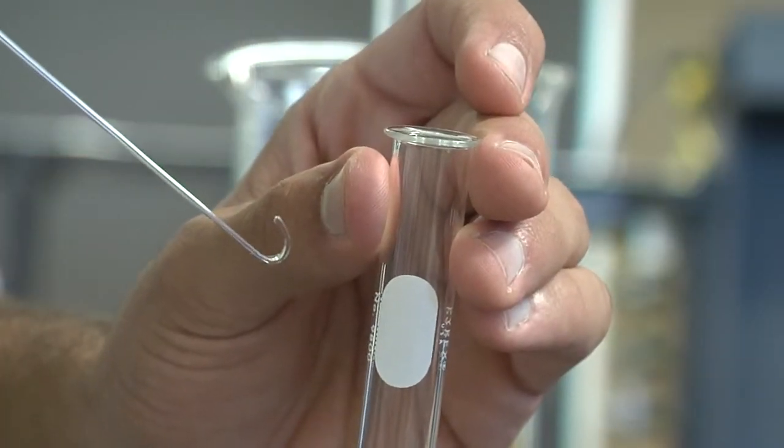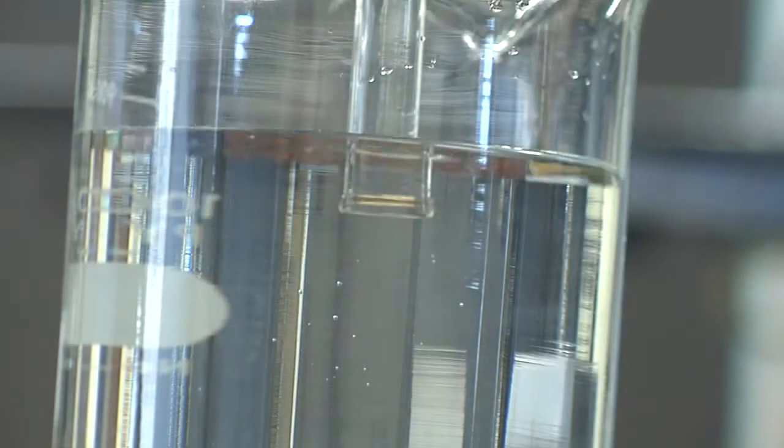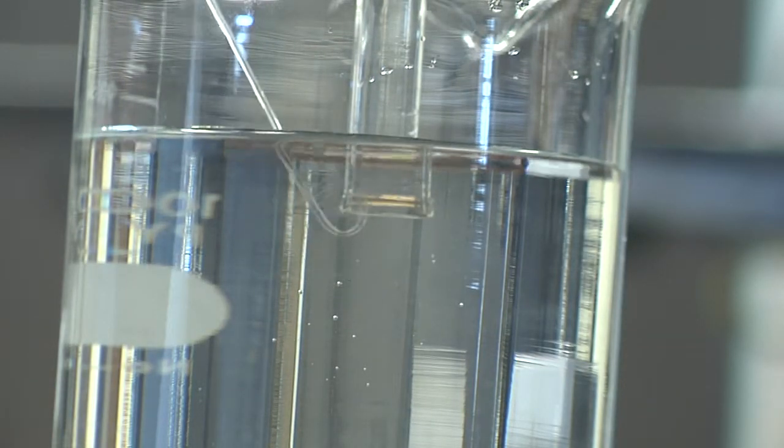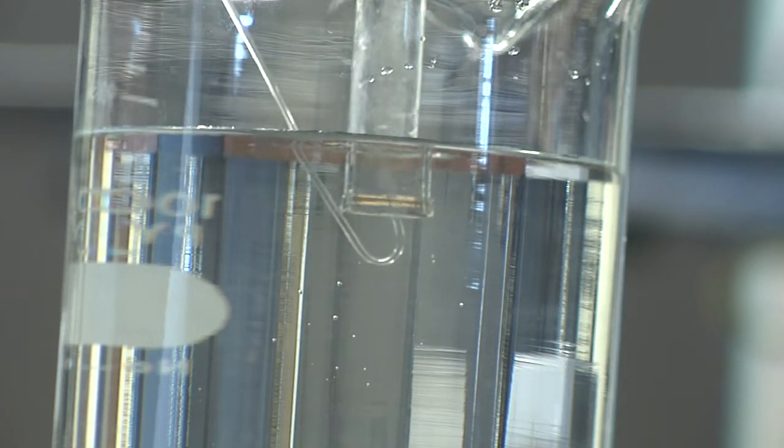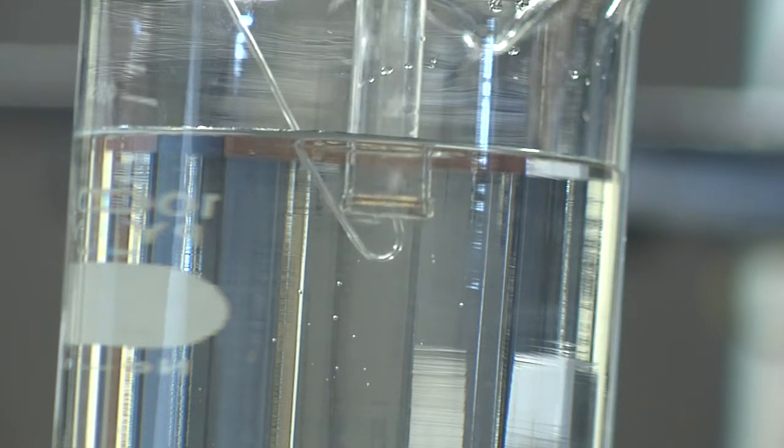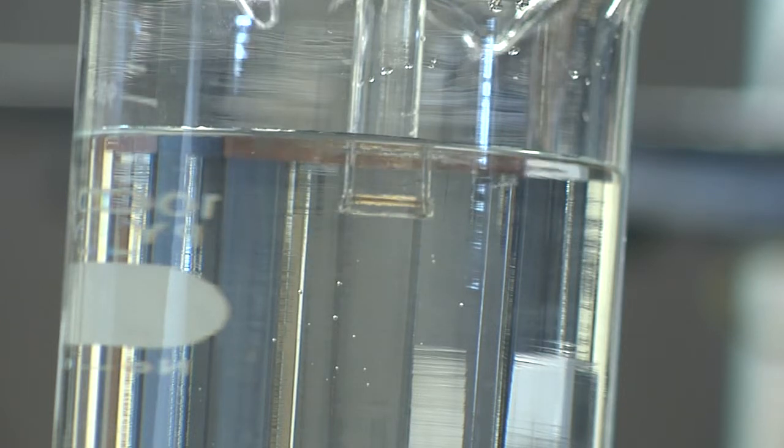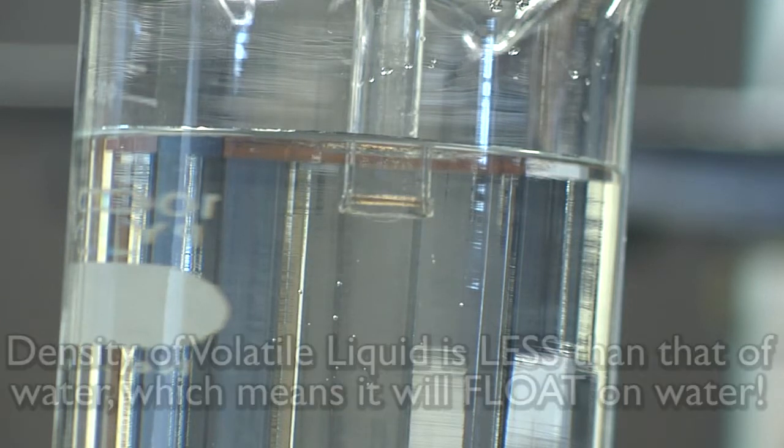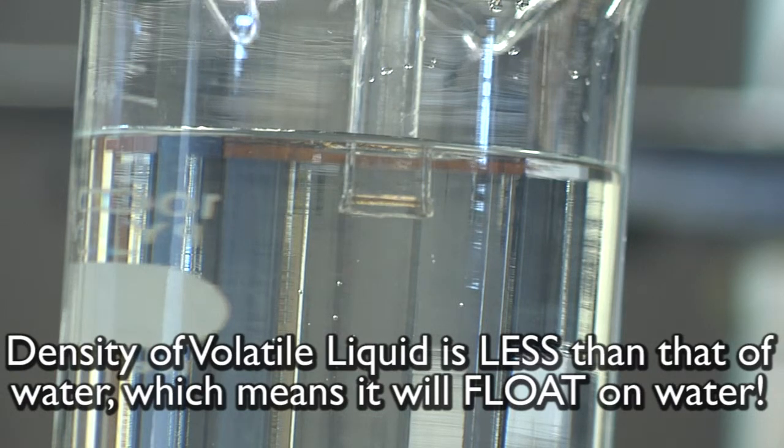And now, using a bent pipette, we are going to scoop up some of our liquid. Now comes the fun part. Using our bent pipette, we are going to insert a little bit of our liquid into the burette. You'll notice that the density of our liquid is lighter than that of water, so it will actually rise through the burette until it reaches the top.